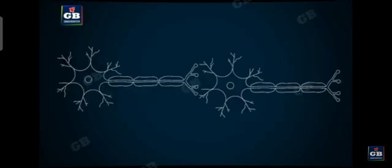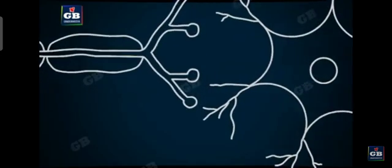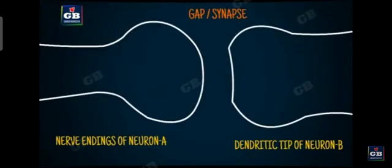The nerve endings are not directly connected to the other neuron because there is some gap between one nerve cell and the other nerve cell. So this gap, this junction is called a synapse.